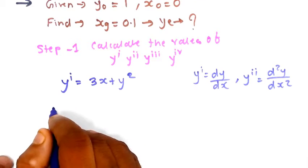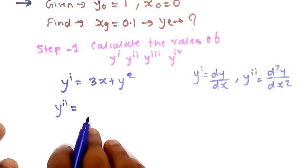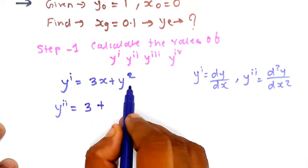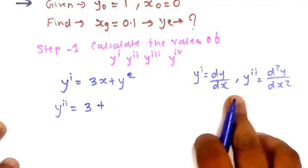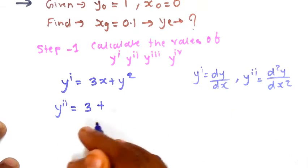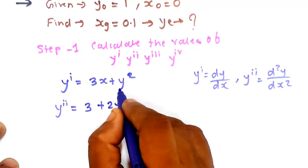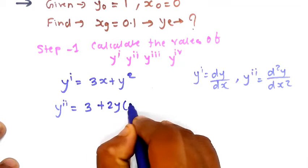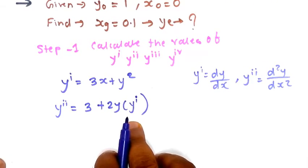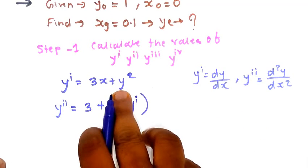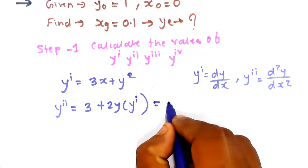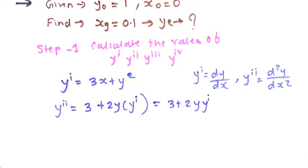Since y1 is already given, find out y2, the second derivative. Differentiating 3x + y²: the derivative of 3x is 3, and for y², since both x and y are variables, we get 2y · y1. So y2 = 3 + 2y·y1.